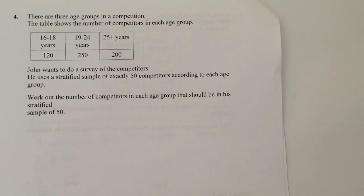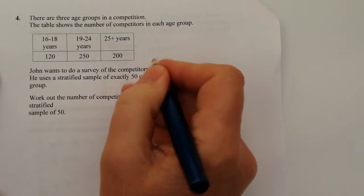The main thing is that we need to work out firstly how many competitors there are all together. Sometimes this information is given to you, sometimes you need to calculate it yourself. This tells me there's 570 competitors in total.